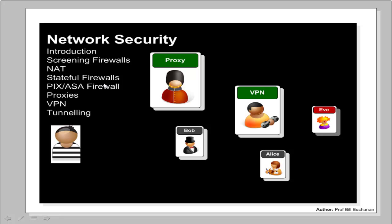In this part of the presentation we're going to look at network security. Another associated presentation will look in more detail at the configuration of firewalls. The aim of this presentation is to give some general background into network security and some of the key components involved. We'll look at firewalls, screening firewalls and stateful firewalls, NAT network address translation, a quick introduction to the PIX ASA firewall, proxies, VPNs and tunnelling.